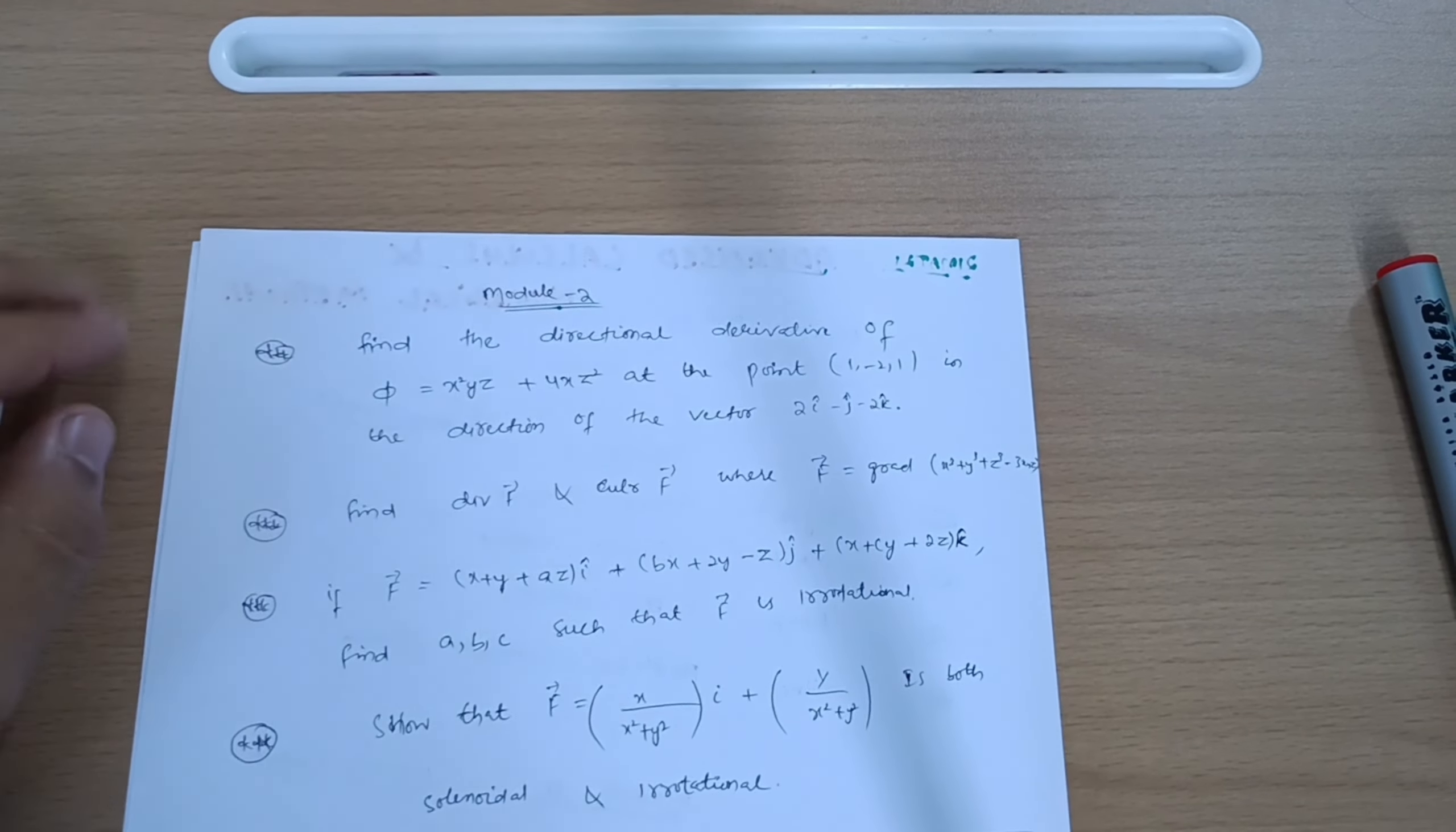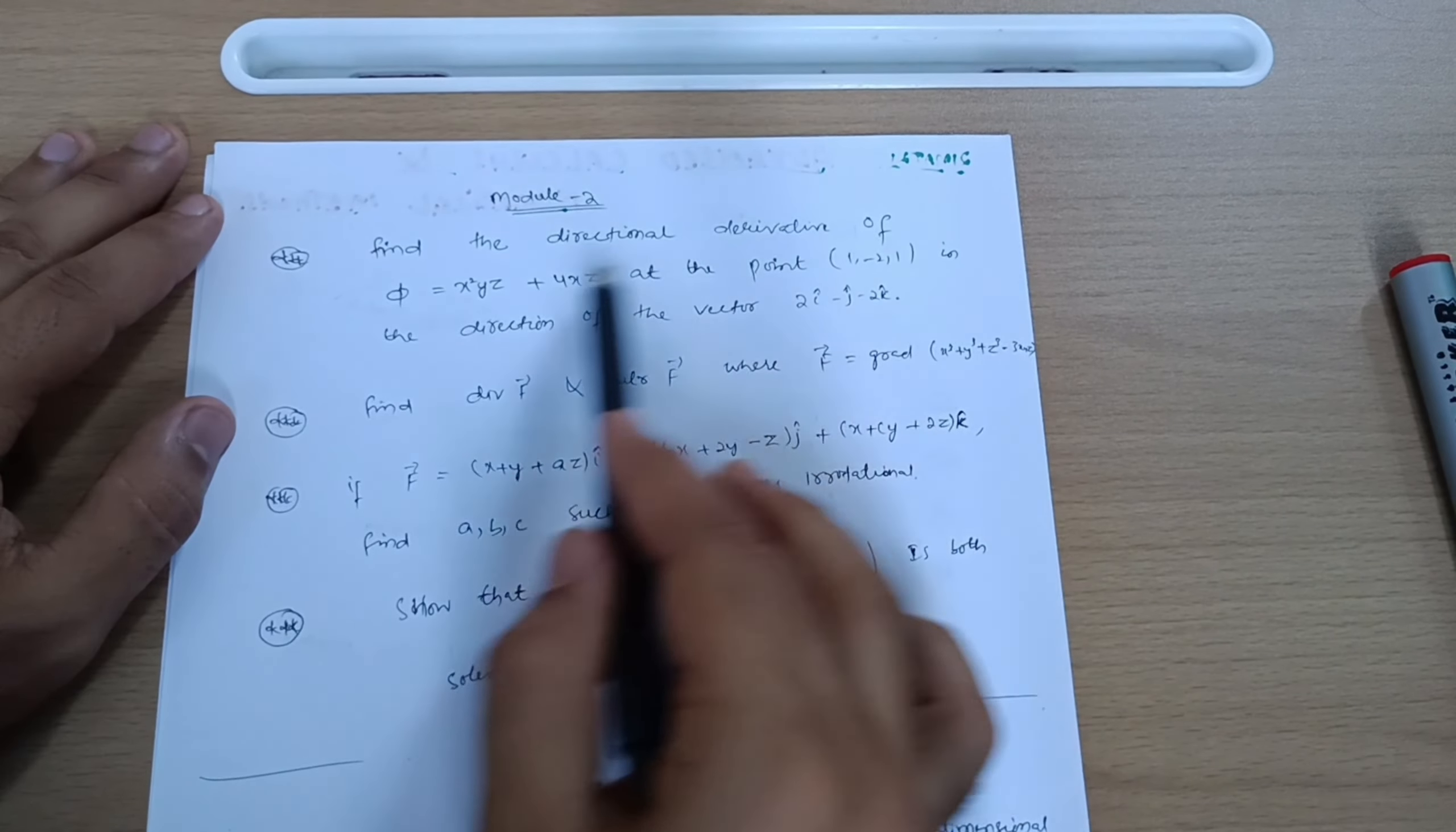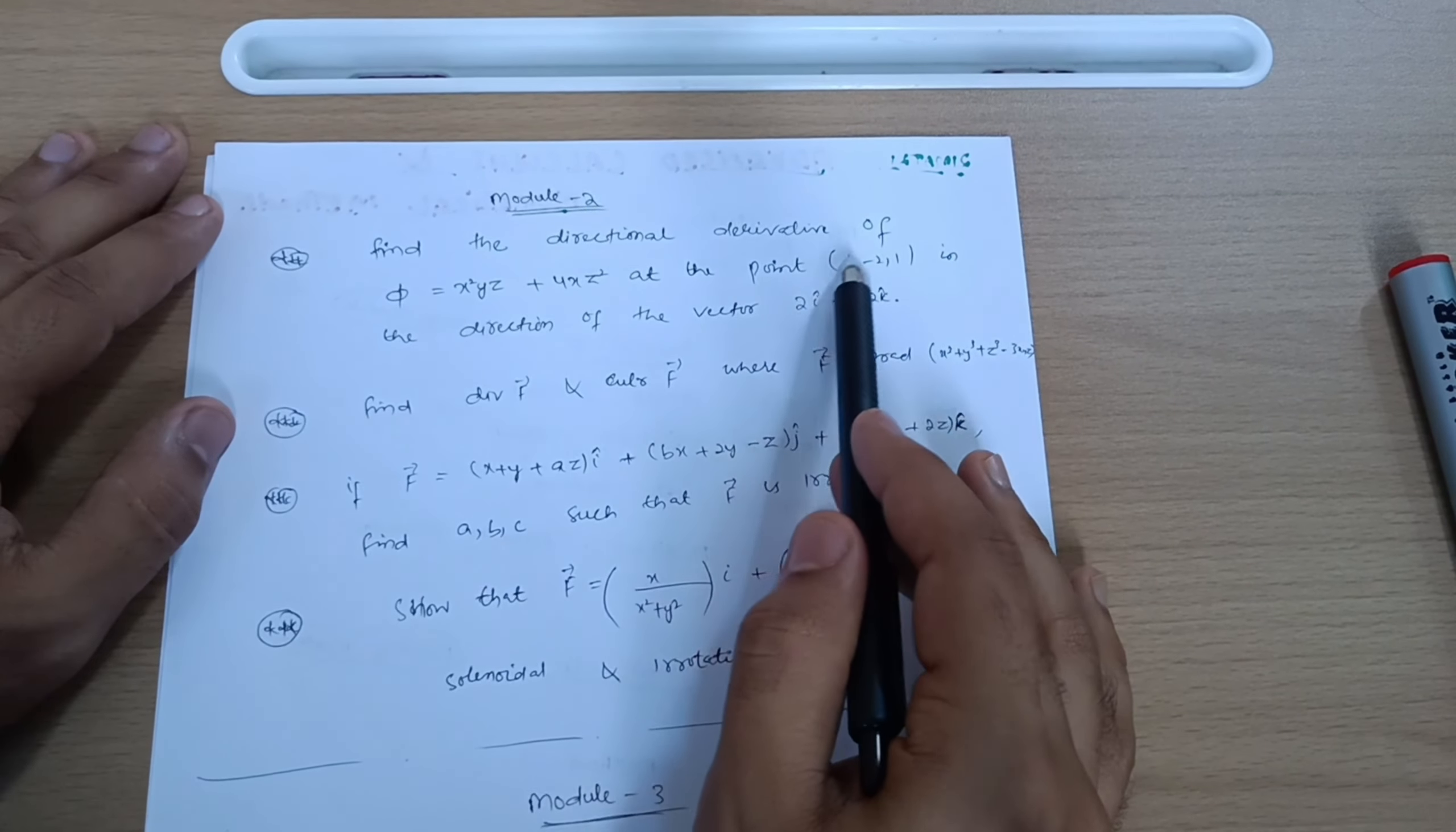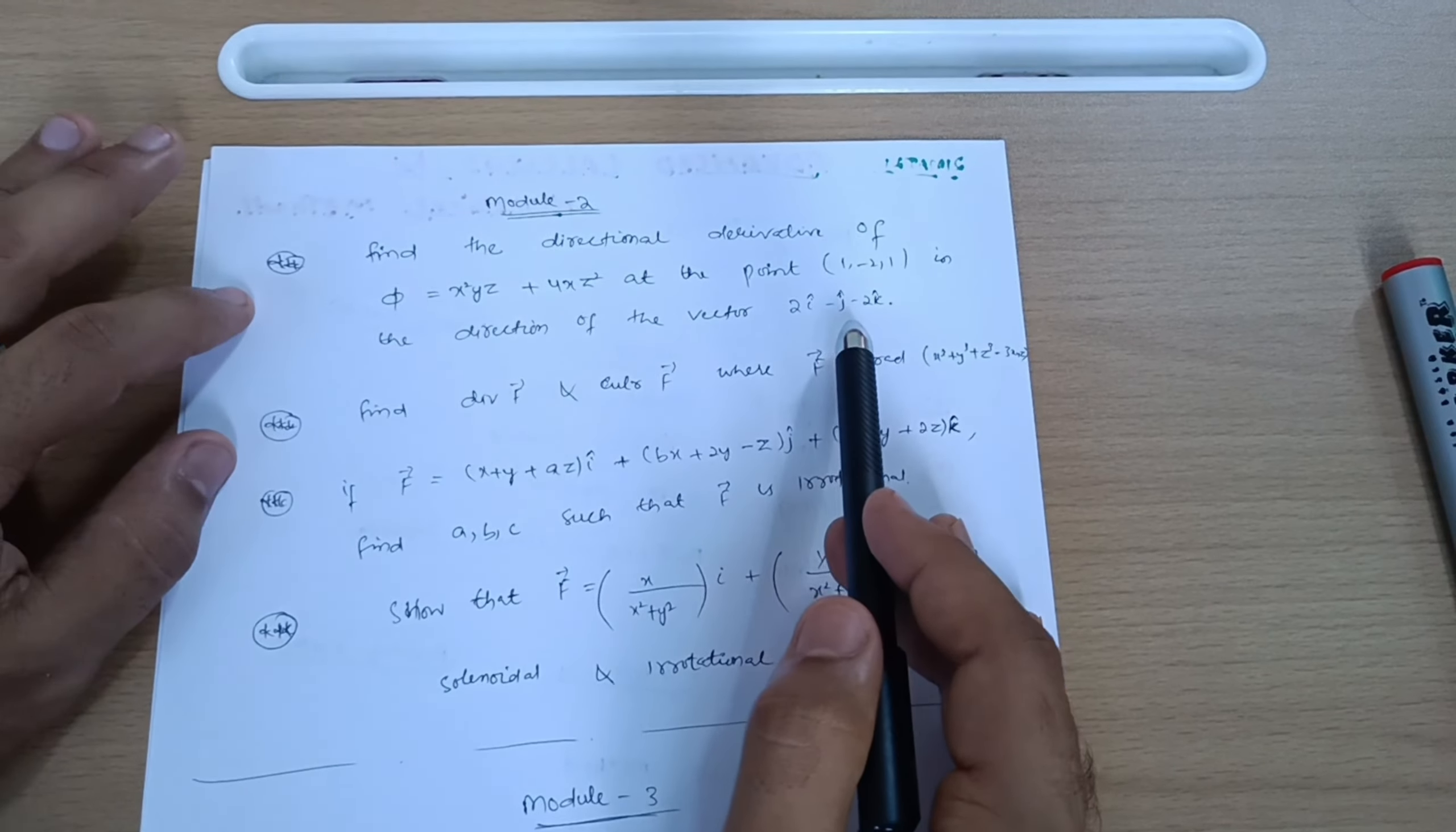Dear 21 scheme students, welcome back to my channel. Hope you are all doing well. If you are having backlogs of M2 21 MAT 21 Advanced Calculus and Numerical Methods, as this is the third year condition for students, this time you have to clear each and every subject of first year, then only you can be admitted in the seventh semester.